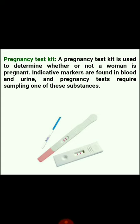Next is the pregnancy test kit, used to determine whether or not a woman is pregnant. Indicative markers are found in blood and urine, and pregnancy tests require sampling one of these substances. Most commonly, it is done by urine test.